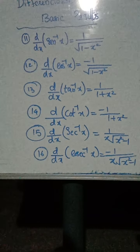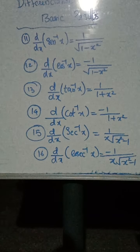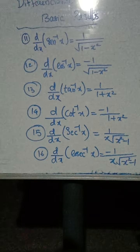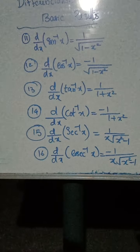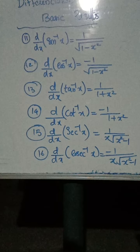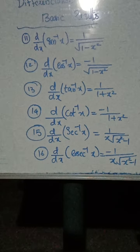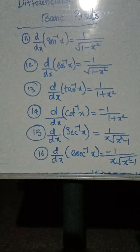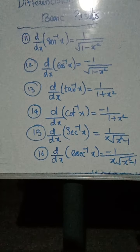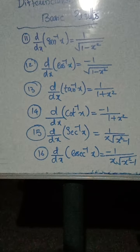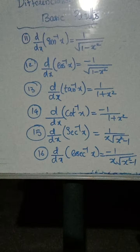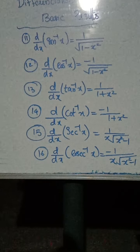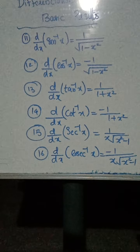Now we discuss the derivative of inverse trigonometric functions. The derivative of sin inverse x is equal to 1 by root of 1 minus x square. The derivative of cos inverse x is minus 1 by root of 1 minus x square.